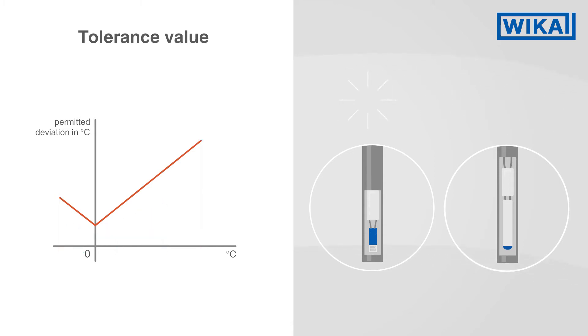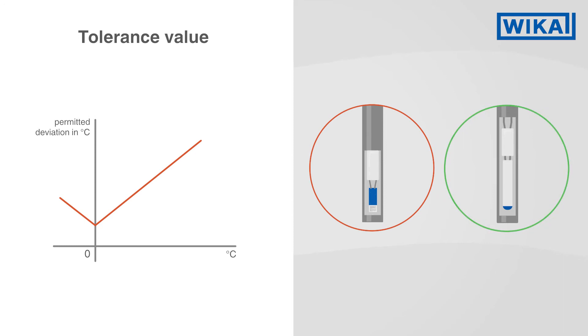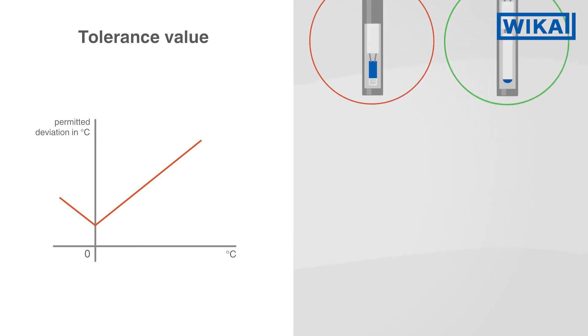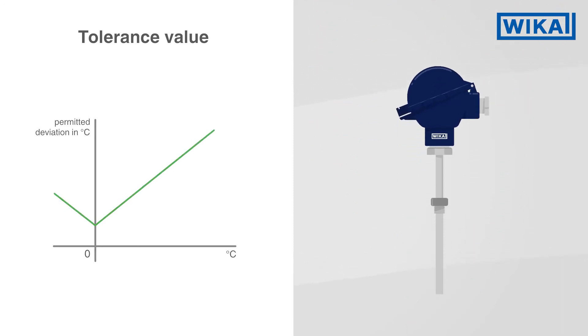The choice between a thin film or wire wound measuring resistor has an effect on the temperature measuring range. Standard resistance thermometers with wire wound measuring resistors in class B are defined from minus 196 degrees Celsius to a maximum of 600 degrees Celsius in accordance with the IEC standard.